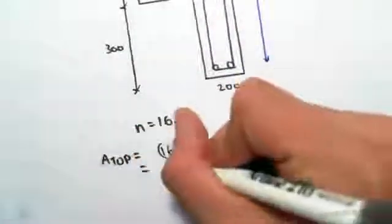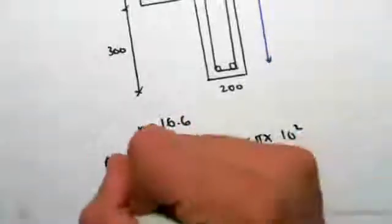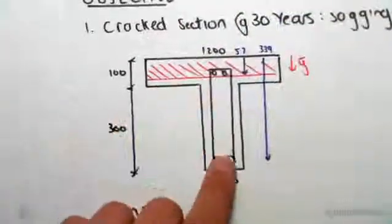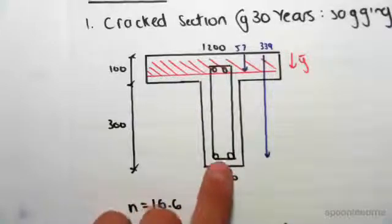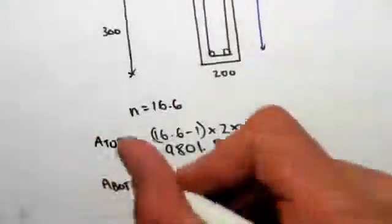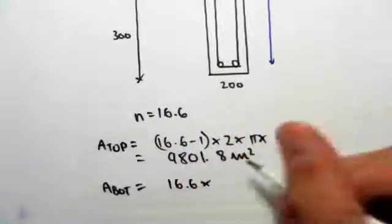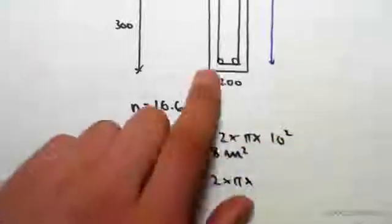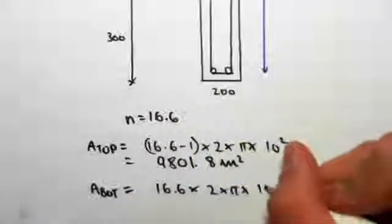Now the area of bottom steel—what we're going to assume is that because this is all cracked here, we don't need to replace these voids. They're cracked, they're gone, so there's no need to replace these voids. Which means that the replacement area is going to be 16.6—we don't have to subtract off one because we're not filling any voids—by 2, by π, by—these were N28 bars, so multiplied by 14².